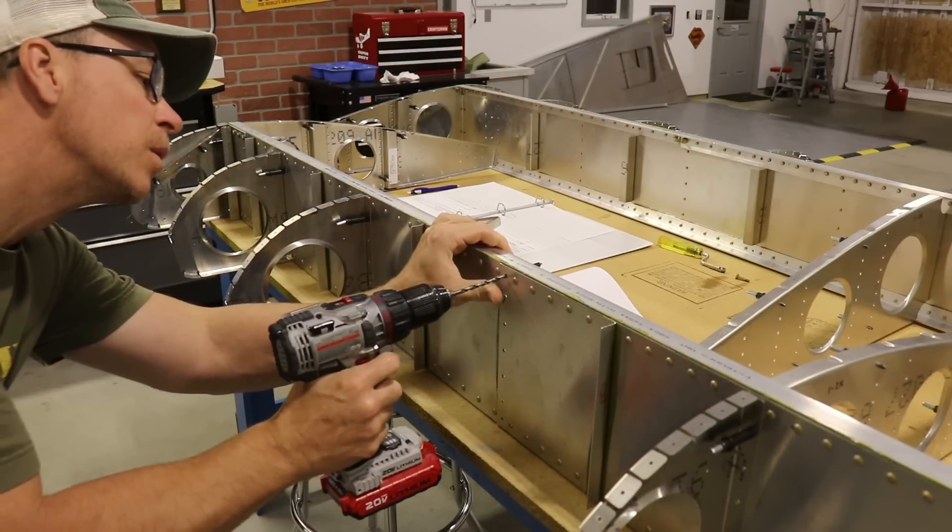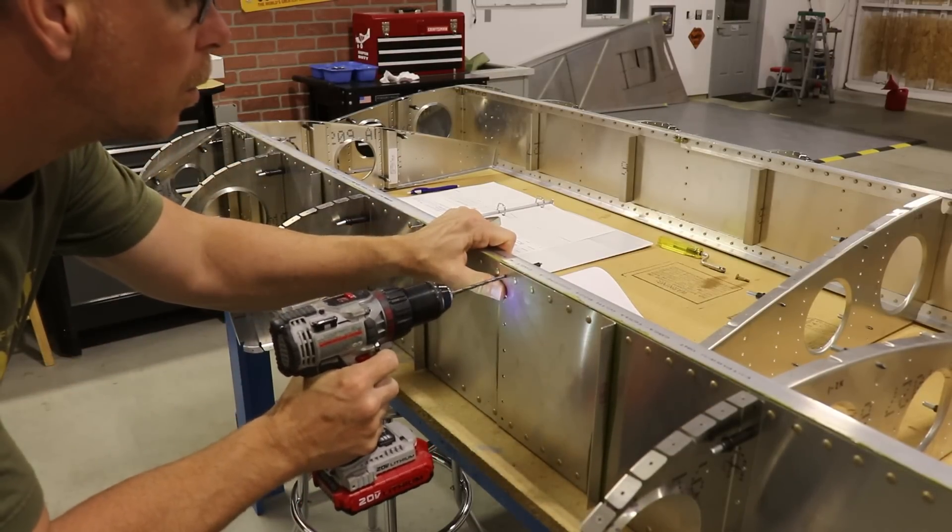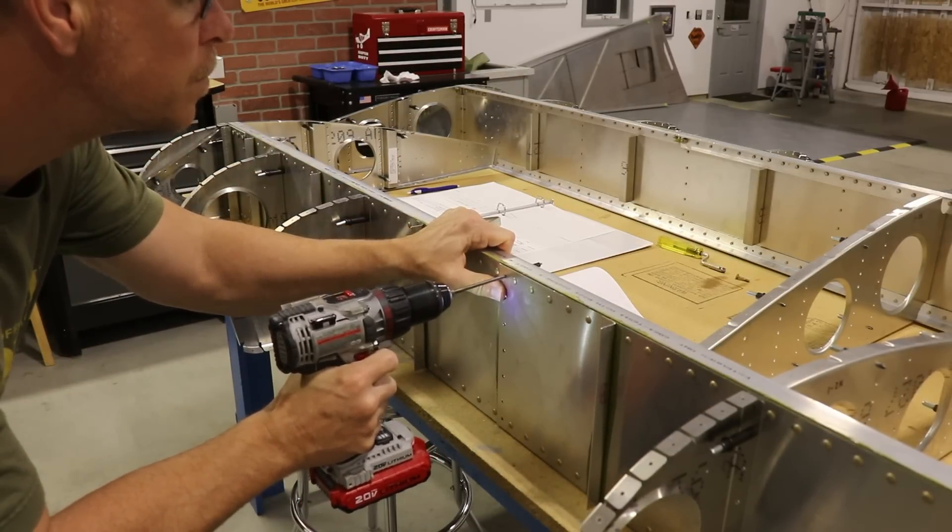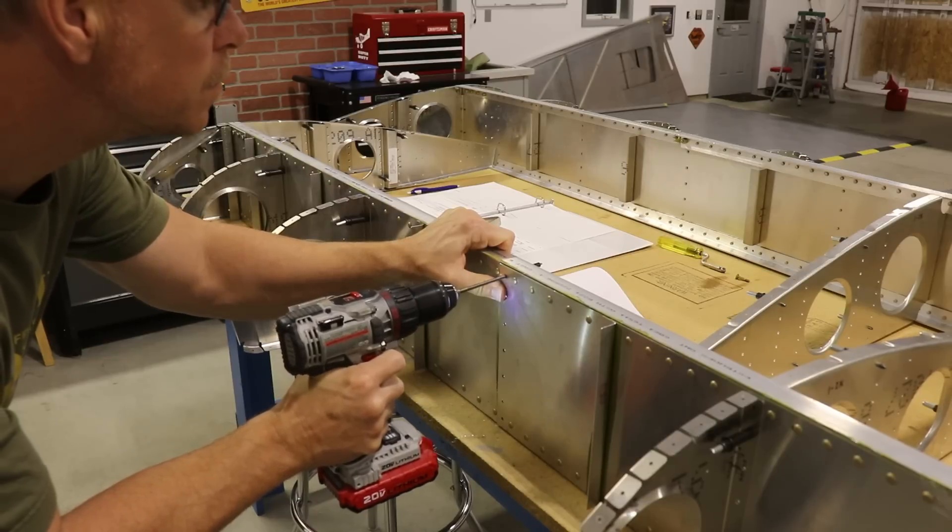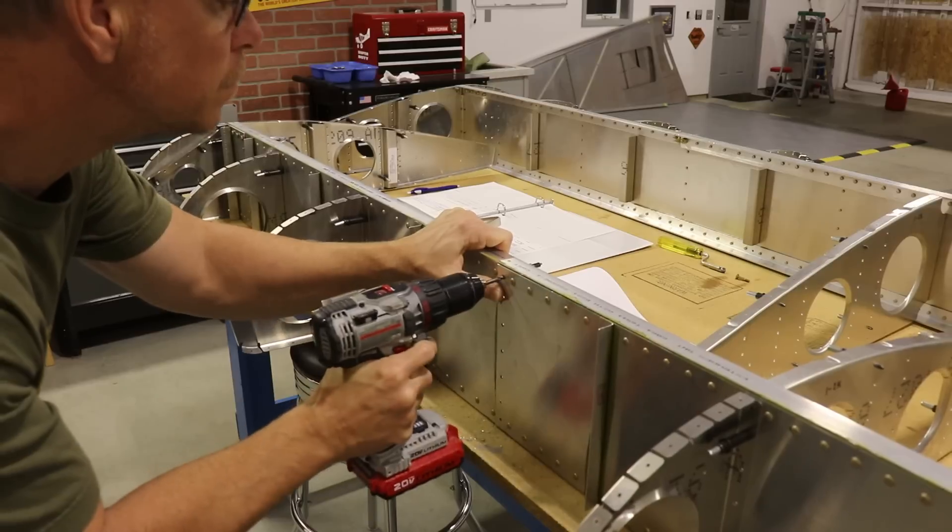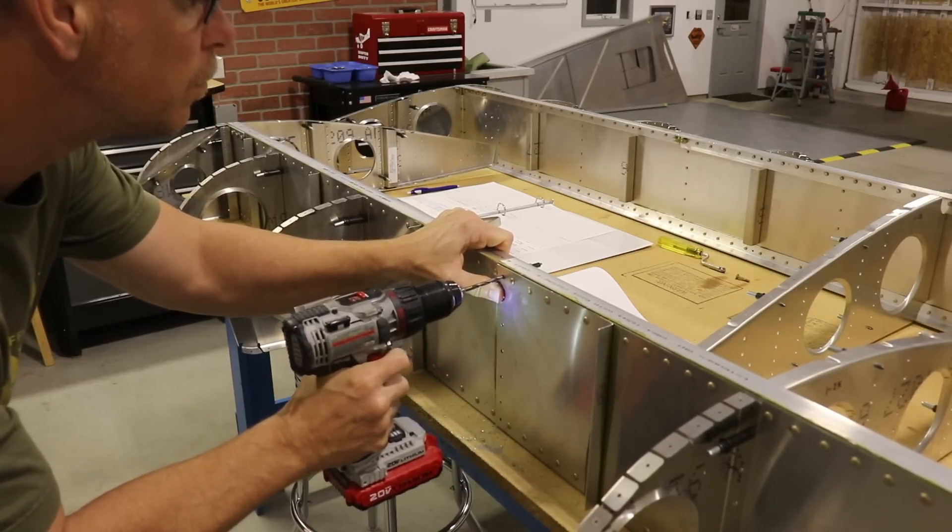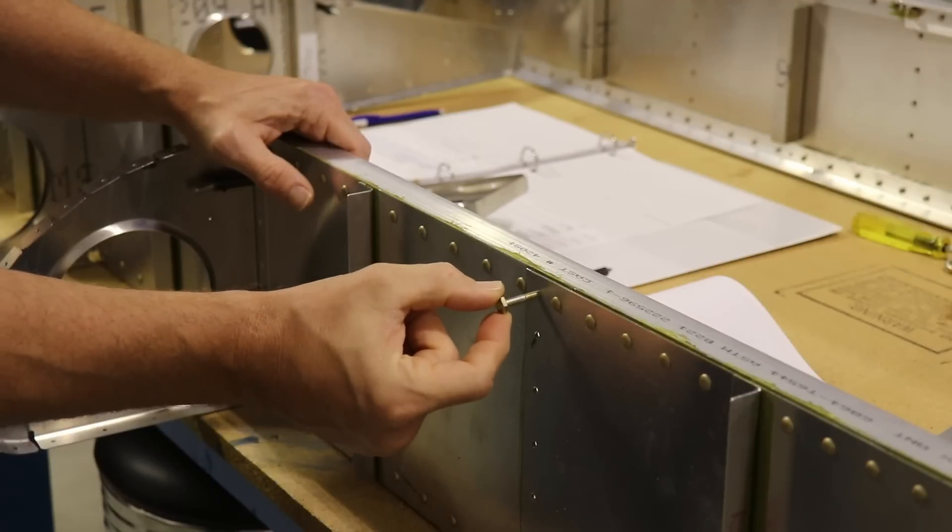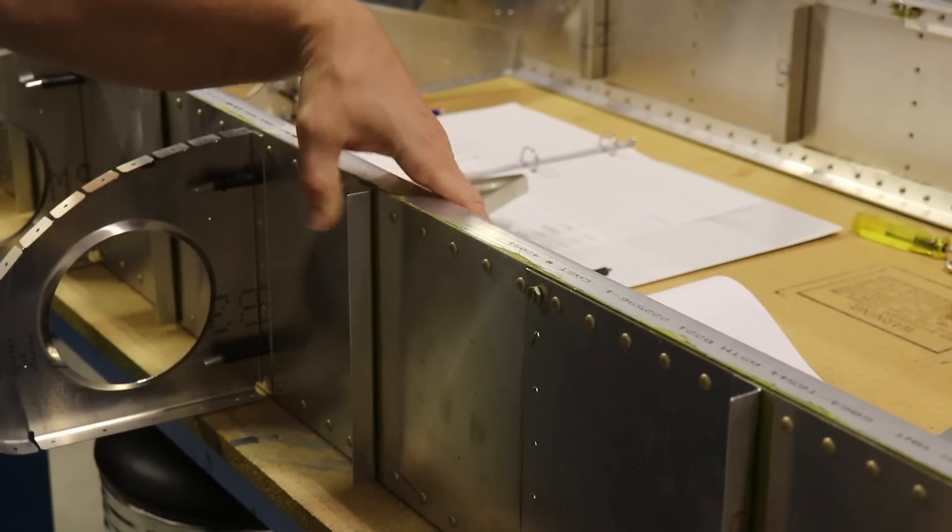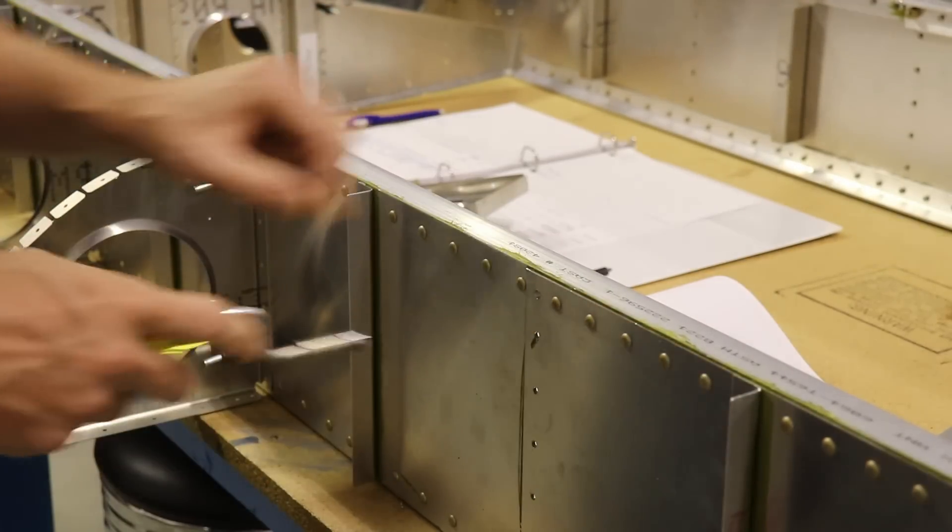There's a few ribs that require a bolt, an AN-3 bolt, which is a 3/16 bolt in a top and bottom hole. Follow your plans and instructions carefully to figure out which ones, but that's what I'm drilling out here. And as you can see, this bolt fits nicely in the hole. Now just drill out the rib and it's ready to go.